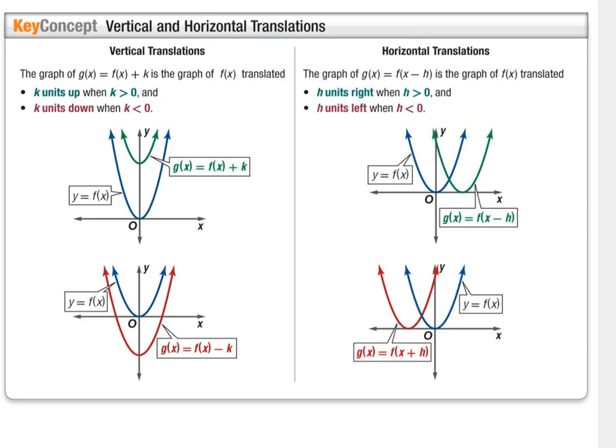For a horizontal translation, you'll see a plus or minus number with the x, probably in parentheses in the equation. If you have x plus a number, that actually goes to the left that many spaces. If you have x minus a number, that goes to the right that many spaces. Anytime you see something in parentheses, it's always going to be the opposite sign or direction of what you'd think.